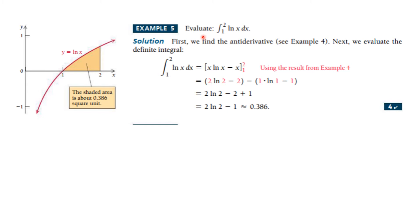Here's another example, and this one is different because it's a definite integral — the answer is going to be a number. We find the antiderivative using Integration by Parts: the integral of u dv equals uv minus the integral of v du, then evaluate at the top and bottom limits. After simplification, the exact answer is 2 ln(2) minus 1, which is approximately 0.386 — representing the shaded area.